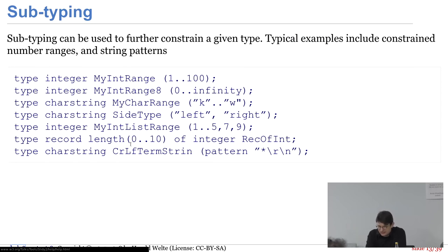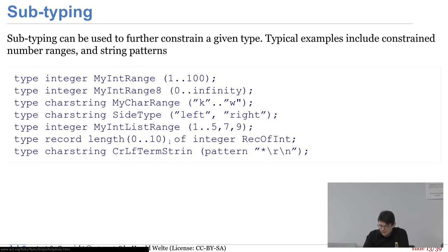Man kann Subtypen definieren – Integers von 1 bis 100, Zeichen nur zwischen K und W im ASCII-Alphabet, oder ein Set, das nur Left oder Right als String haben kann. Man kann Ranges mit expliziten Werten mischen: 1 bis 5 oder 7 oder 9. Längenbeschränkungen sind möglich, also ein Record of Integer der Länge 0 bis 10. Und Strings können bestimmten Patterns entsprechen – man kann wirklich mit regulären Ausdrücken hingehen und sagen, der Datentyp kann immer nur Werte haben, die diese Regular Expression matchen.